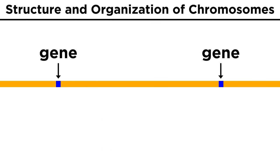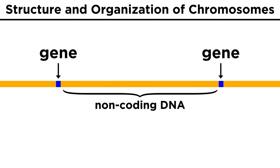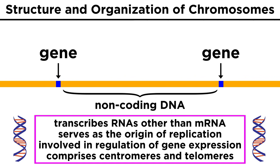In between all the genes is non-coding DNA. This is the majority of the DNA which does not code for any proteins. However, this area still serves a variety of functions, like transcribing RNAs other than mRNA, serving as origins of replication, regulating gene expression, and comprising centromeres as well as telomeres.